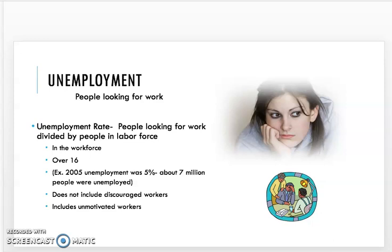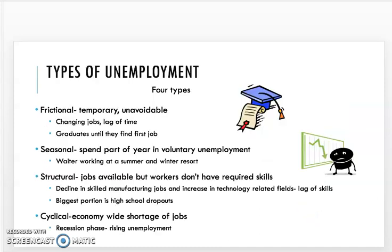Unemployment is bad right now because people are being laid off as businesses shut down, but there are different types of unemployment. To be considered unemployed, you have to be over 16, have already been working, lost a job, and be actively trying to find one — it doesn't include discouraged workers or people who don't want a job. There are four major types: frictional, seasonal, structural, and cyclical. Frictional is temporary and unavoidable — like changing jobs or graduating and waiting for your first job. Seasonal is expected, like a resort waiter being laid off in summer or a construction worker in November and December.